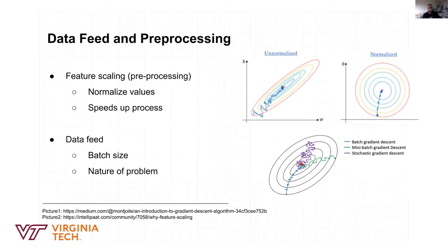One of the things we do with our models is pre-processing and data feed. Pre-processing operations we apply to our data can actually speed up the model. For example, normalizing our features — sometimes features are not well normalized and are spread over a large range, so we normalize them to make the model work better.